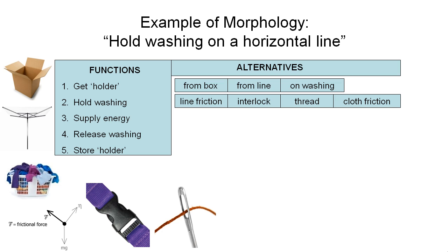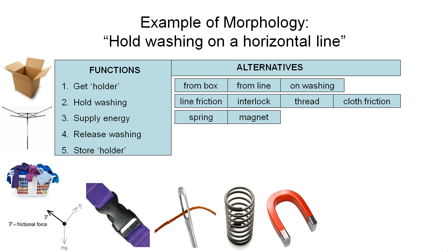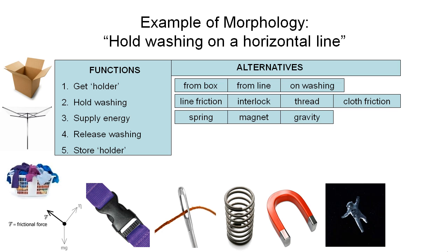In terms of supplying the energy required to achieve the holding of the washing, there are a few options. A spring is quite commonly used — this could be different types of spring, not necessarily a coil spring; maybe a leaf spring or a tension spring. Maybe we could use a magnet — that's an option. Maybe gravity could hold it if we balance it really well, though maybe that's not good enough on its own. Maybe in combination with some of these other options, we can get it to work.